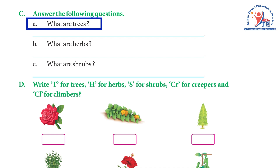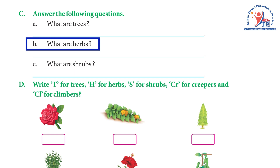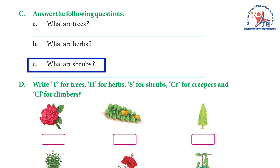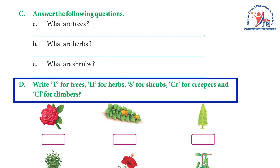Exercise C — answer the following questions: (a) What are trees? Answer: very big plants are called trees. (b) What are herbs? Answer: some plants are very small with soft and green stems — they are called herbs. (c) What are shrubs? Answer: short and bushy plants are called shrubs. (d) Write T for trees, H for herbs, Sh for shrubs, Cr for creepers, and Cl for climbers.